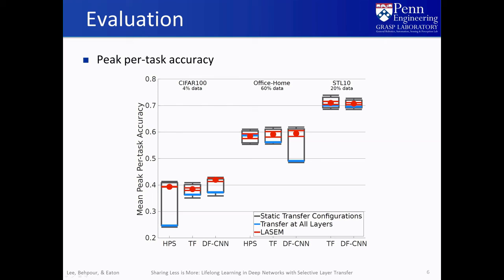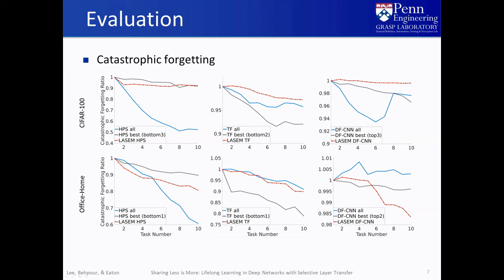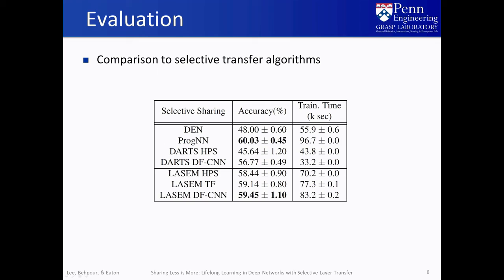We applied LASEM to three deep learning architectures and evaluated them on three datasets. We also compared LASEM to a brute force evaluation of different static transfer configurations. The results show that LASEM chose transfer configurations that perform toward the top of its range of static transfer configurations, particularly when the static transfer configurations have a wide range of performance. The transfer configurations selected by LASEM showed little forgetting compared to other configurations. This is a particularly interesting result because LASEM does not consider the performance on previous tasks to avoid catastrophic forgetting. Transferring only appropriate layers seemed to minimize negative reverse transfer between tasks.